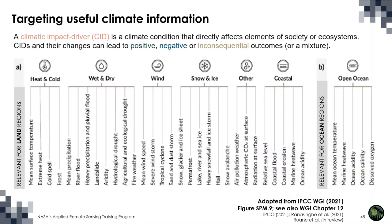An important aspect of selecting a climate projection set is targeting useful climate information. It is useful to use a new framework developed in the last IPCC assessment around the concept of climatic impact drivers, or CIDs. A CID is a climate condition that directly affects elements of society or ecosystems. CIDs and their changes can lead to positive, negative, or inconsequential outcomes, or a mixture of all of these, depending strongly on the system in question.